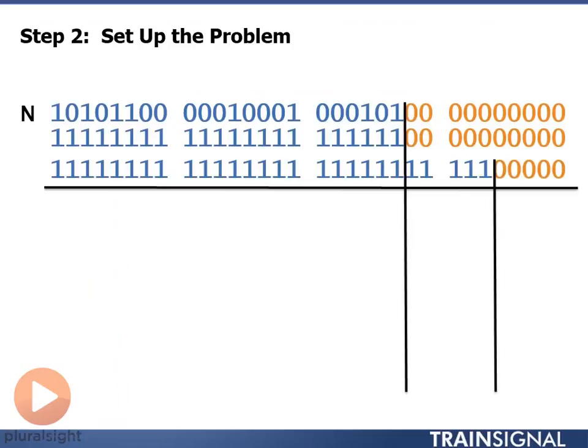We set up our problem then. To set up the problem, we take our given address and our given mask. We draw a line between the given network and host portion. We calculate our new mask by borrowing the additional bits we need. Here we needed 17 networks, so we have to borrow 5 bits. We make our new mask and draw our line between our new network portion and host portion.